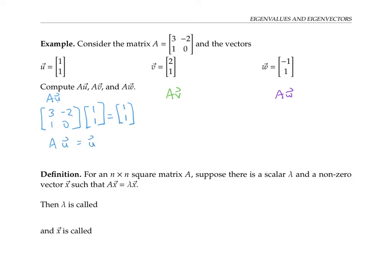Let's see what happens when we do A times v. This time we get an answer of [4, 2]. So when we multiplied by v, we didn't get v back again, but we did get two times v, because four is twice two and two is twice one. So we have that A times v is twice v.